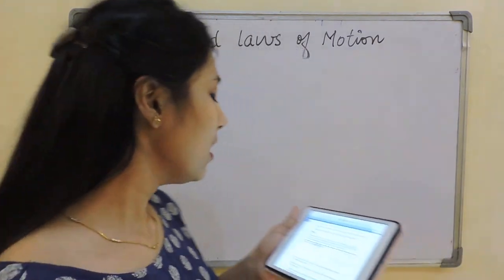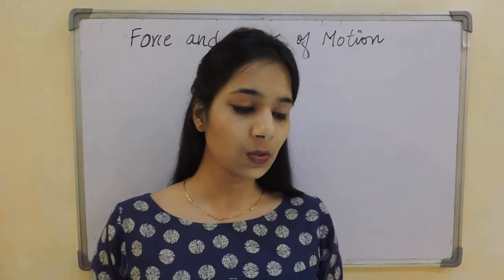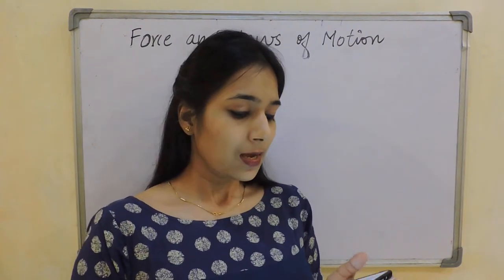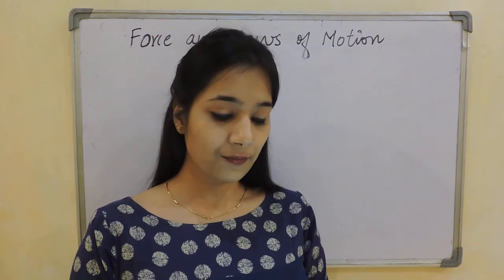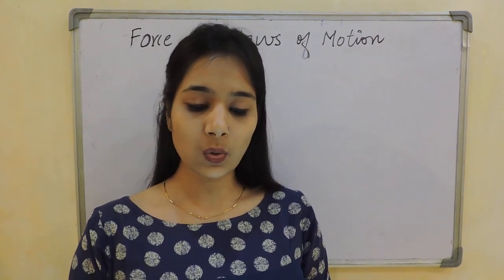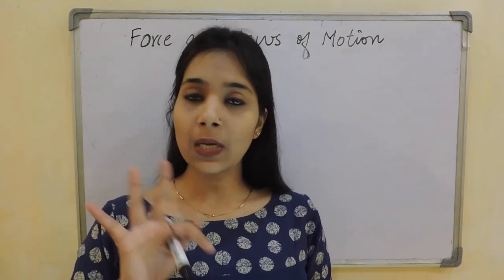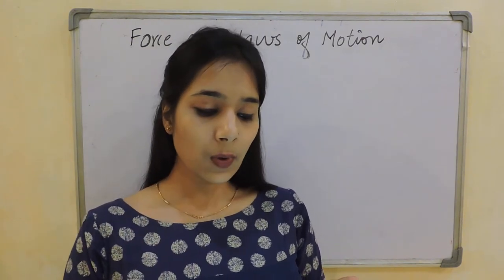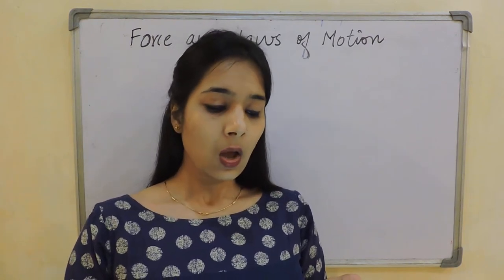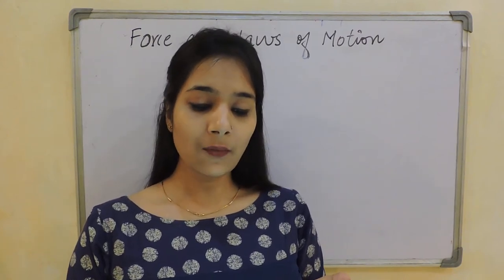The first question: the velocity of a body of mass 10 kg increases from 4 meter per second to 8 meter per second when a force acts on it for 2 seconds. It's better if you solve the question along with me so you can match the solution. There are 3 parts: first, what is the momentum before and after the force acts; second, what is the gain in momentum per second; third, what is the value of the force.